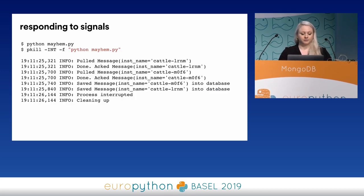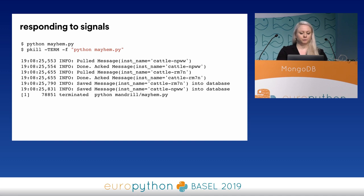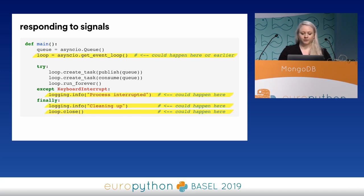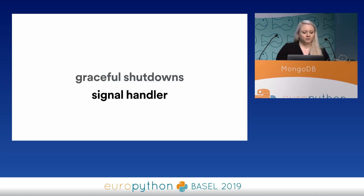So if we run it as is and then send it SIGINT or SIGTERM, we see that we do get to that except and finally block with these two log lines. However, if we send our program a signal other than SIGINT — like SIGTERM — we don't actually reach that finally clause. It should also be pointed out that even if you only ever expect a SIGINT signal, it could happen outside of the catching of exception, potentially causing the service to end up in an incomplete or otherwise unknown state. So instead of catching KeyboardInterrupt, we can use a signal handler on the loop itself.